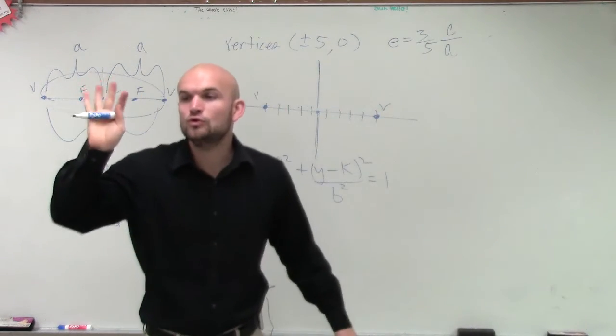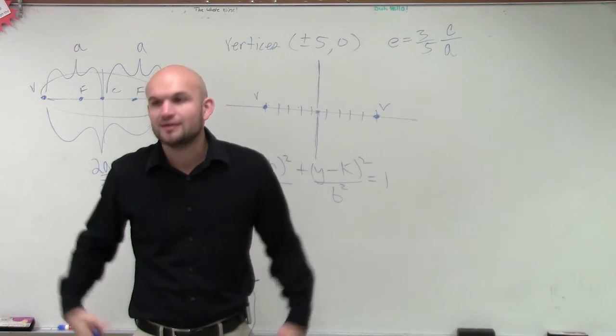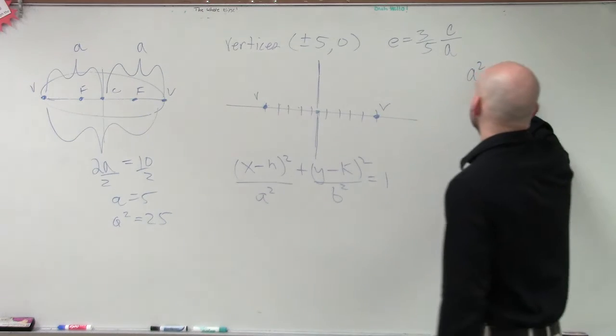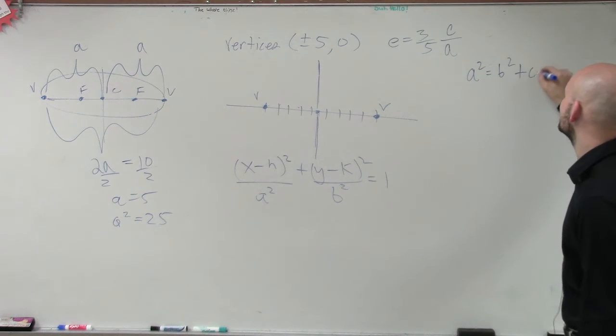Does anybody have the answer to that one? Yes? So we can find b. Exactly. And how are a, b, and c related to each other? It is a squared equals b squared plus c squared.